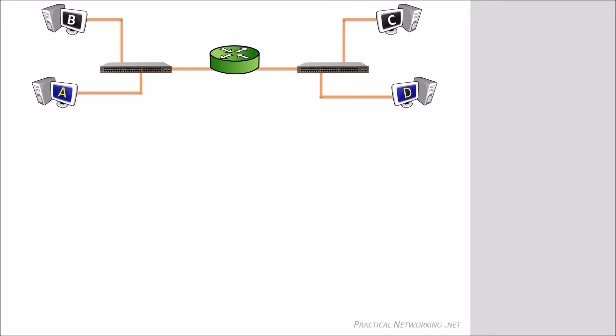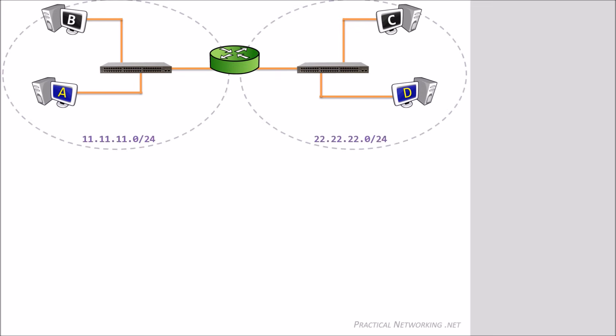This is the sample topology we will be using. Our topology will have four hosts, two switches, and one router. If you read the article series, then you understand that routers facilitate communication between networks. Since our router has two connections, it means we have two IP networks in our topology.